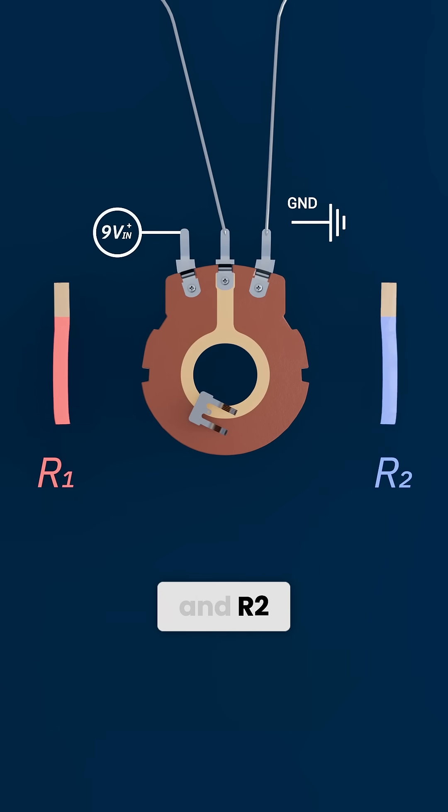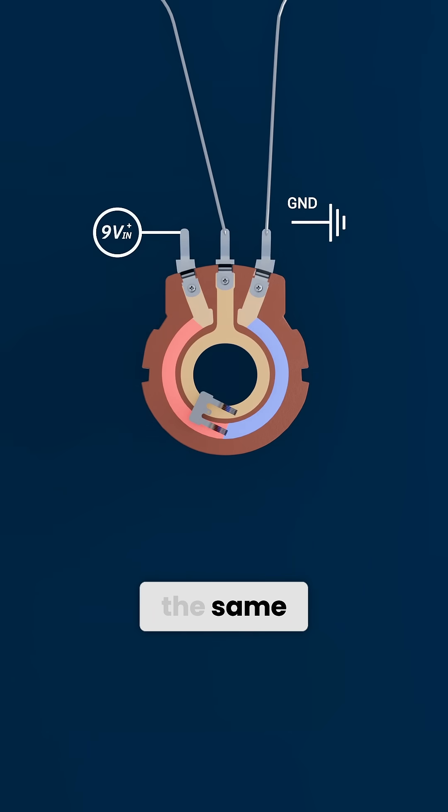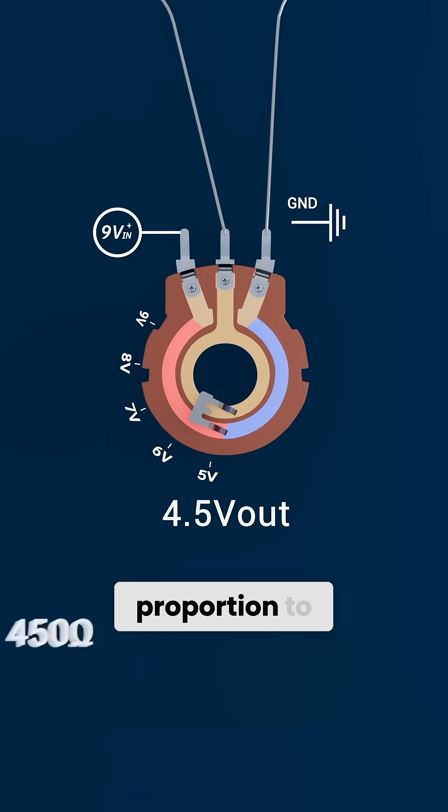Because R1 and R2 are connected in series, the same current flows through both of them. So the voltage drops across each section in proportion to its resistance.